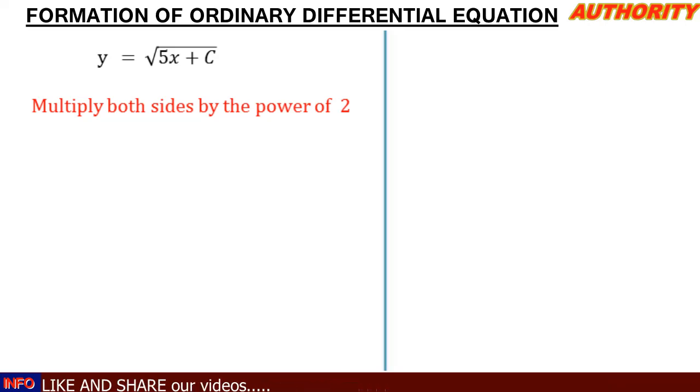We have square root here, so if we multiply by the power of 2, the square root on the right-hand side will disappear. But before then, look at what it simply means.